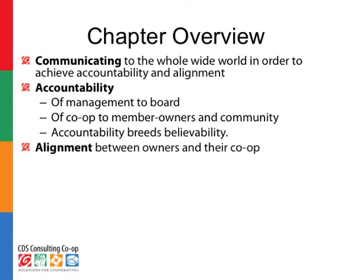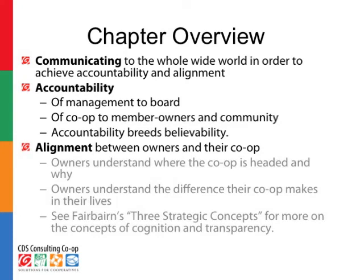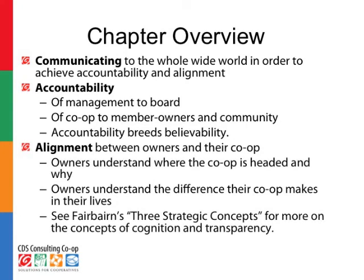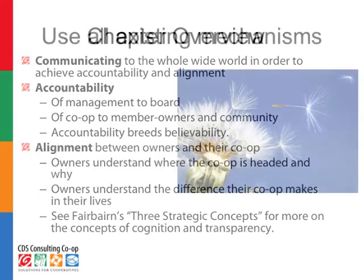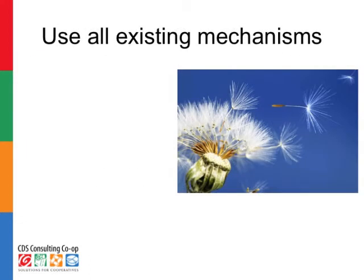Alignment is a concept that Brett Fairbairn does a good job of explaining in his video, which you can find in the CBuild library. Essentially, how do we make sure that the association and the enterprise — the two aspects of our cooperative — are in alignment with each other, and how the people, the owners, are aligned with their business. Managers should be using all existing mechanisms to get this word out and communicate with members and the community.